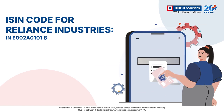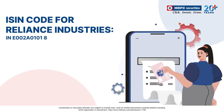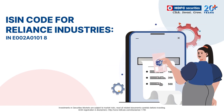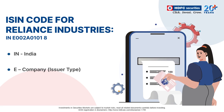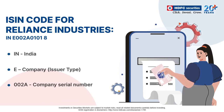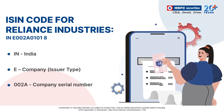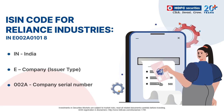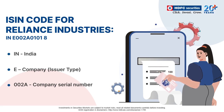Let us understand it better by decoding all characters in the ISIN code for Reliance Industries. We have already discussed the first two letters, which is the country code IN for India. The next is the issuer type — in this case, the letter E stands for company. The following four characters, 002A, are used to identify the company, i.e. Reliance Industries. Every company is assigned a unique number that runs from 001A to 999F.